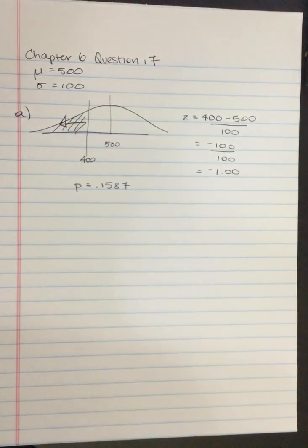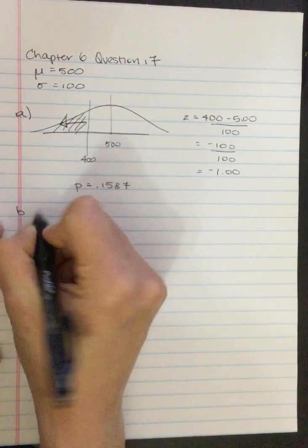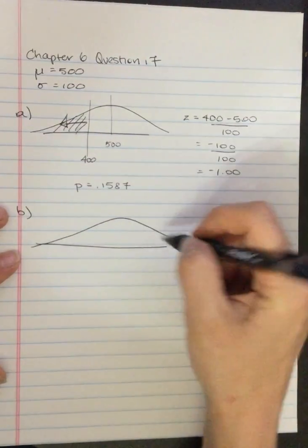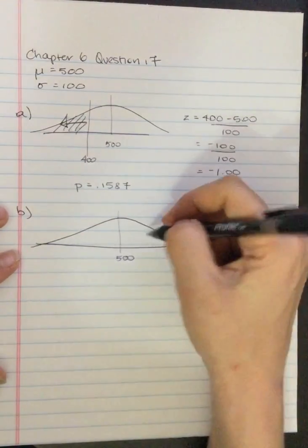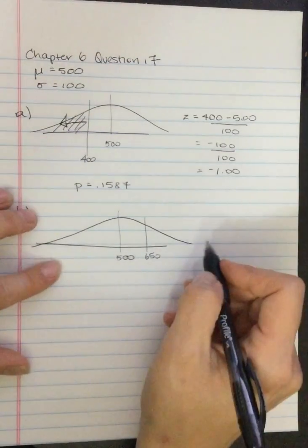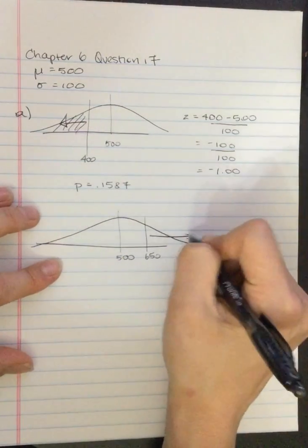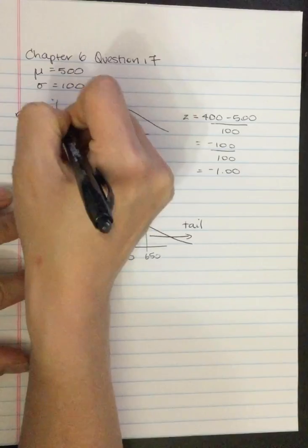B, what proportion have SAT scores greater than 650? So again, our mean is here. 650 is greater. And we want to have SAT scores greater than 650. So again, we're going to be looking for the tail here, just like we were looking for the tail up here.